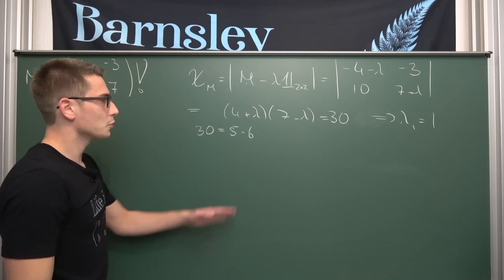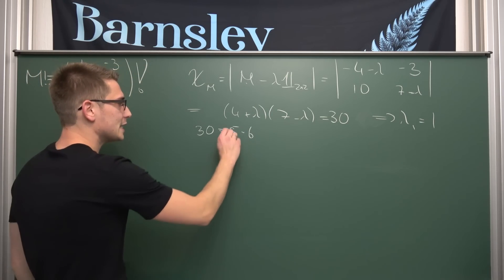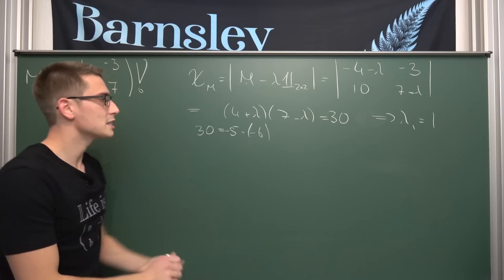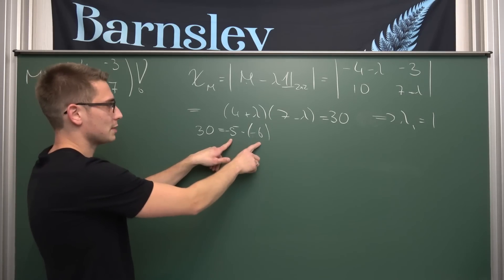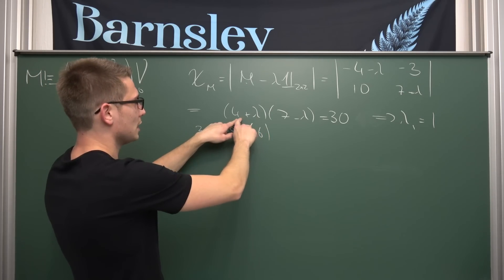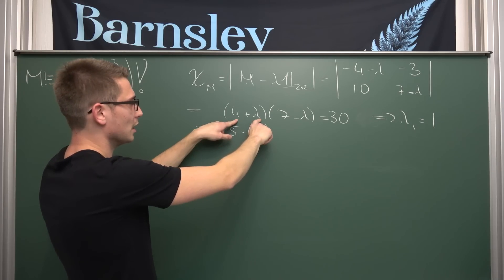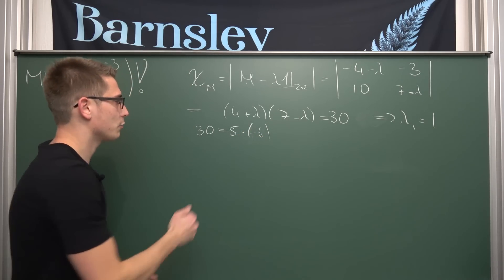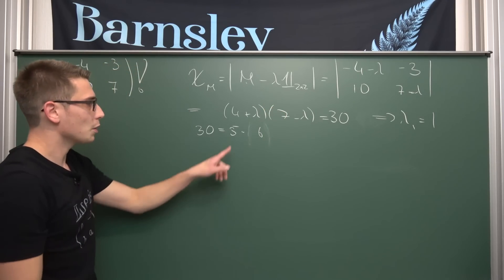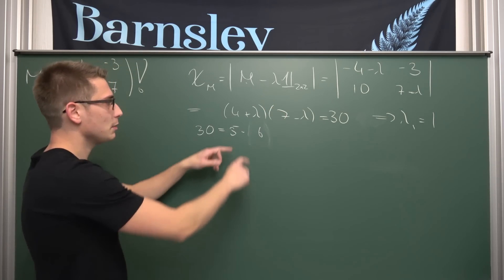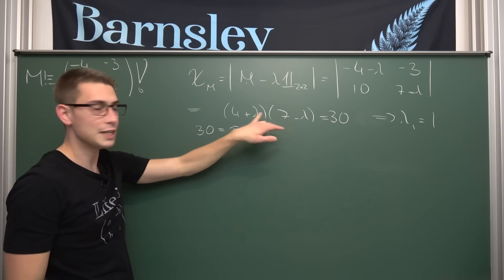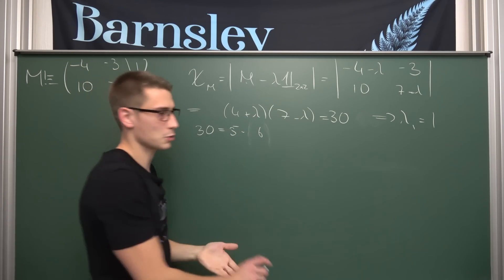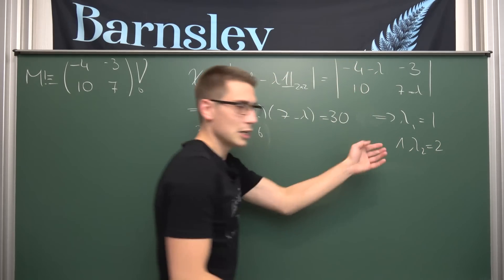What about the other eigenvalue? We could also try 5 and 6 again but with the positions swapped - 5 here and 6 here. So 7 minus what gives us 5? That's 2. And 4 plus 2 gives us 6. So that does work out, and we have a second eigenvalue lambda 2 equal to 2. Those are our two eigenvalues. Meaning the diagonal matrix T is going to be just our eigenvalues on the main diagonal: 1, 0, 0, 2.